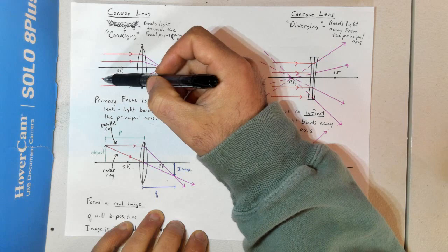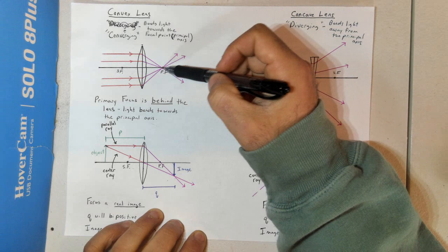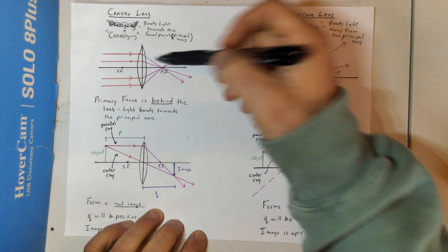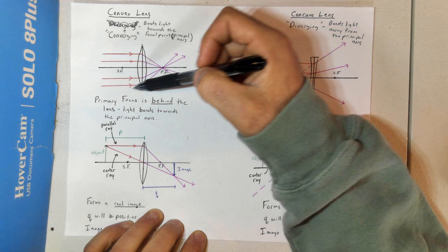Light bends towards the principal axis, and by the structure of this lens, all this light will converge on one point — what we call the primary focus. The exact same distance on the other side is what we call our secondary focus.